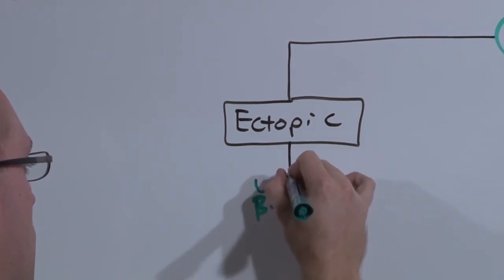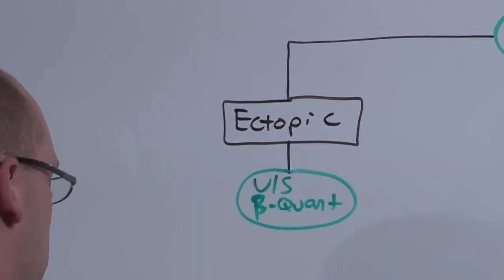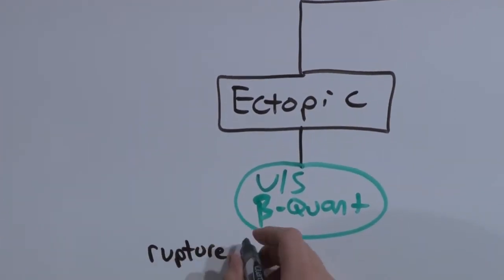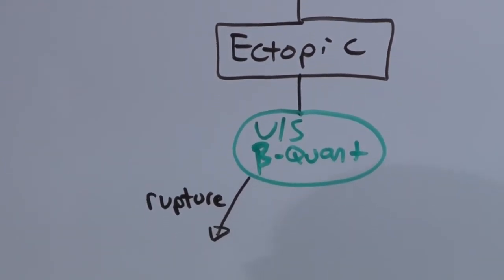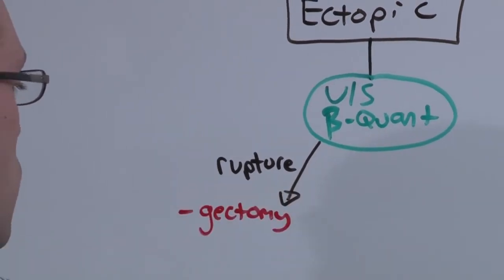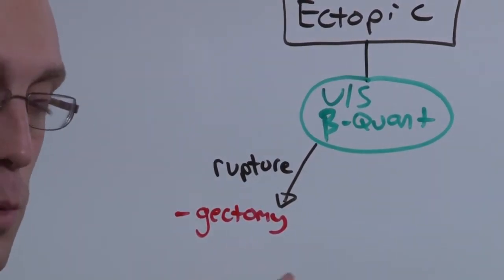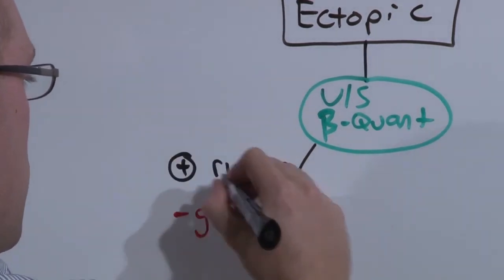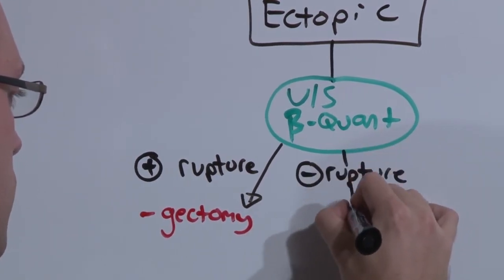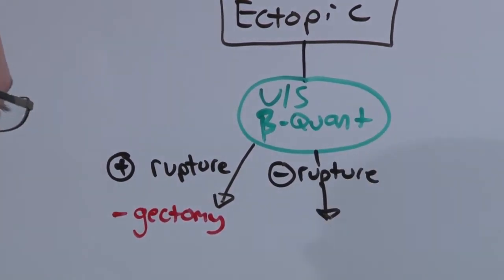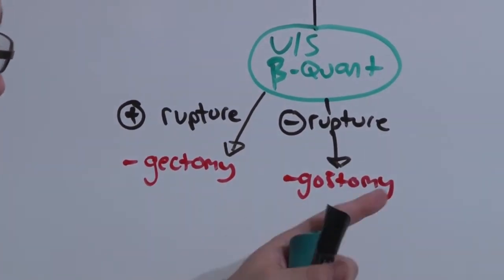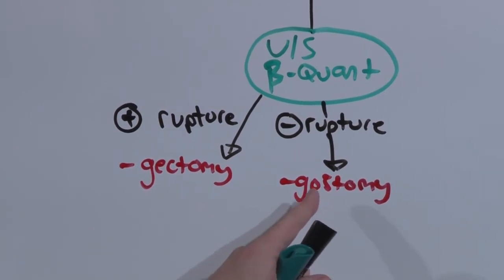You're going to quantify how much beta HCG is in your blood. Because if you have rupture of the tube, you're going to perform a salpingectomy. That is, you remove the entire tube. If there is no rupture, you are going to perform a salpingostomy. If you just open up and remove the ectopic, you don't necessarily have to take out the entire tube.